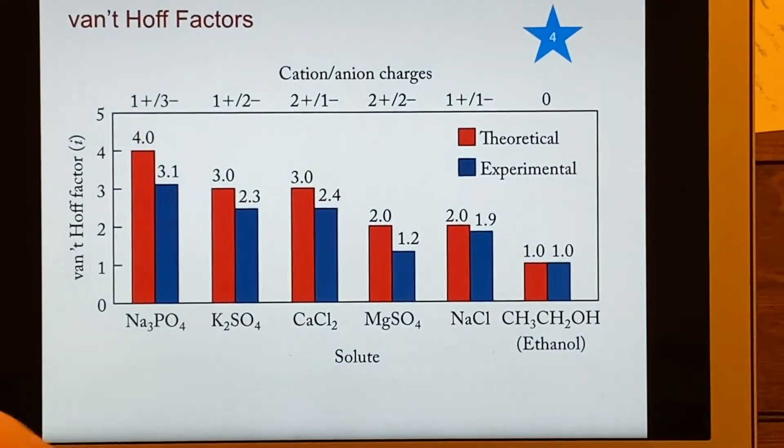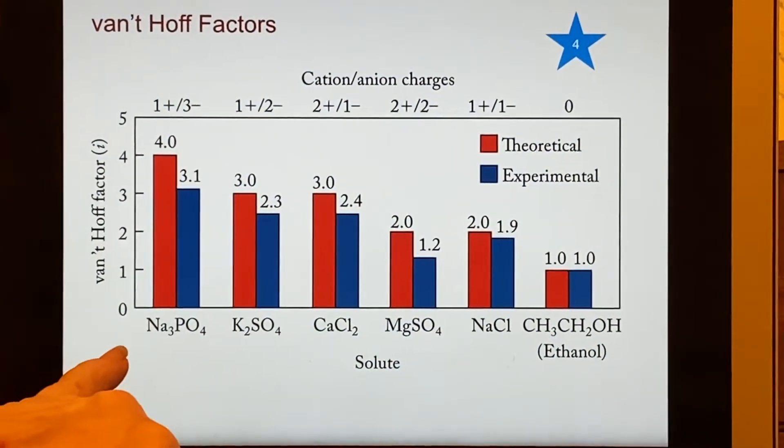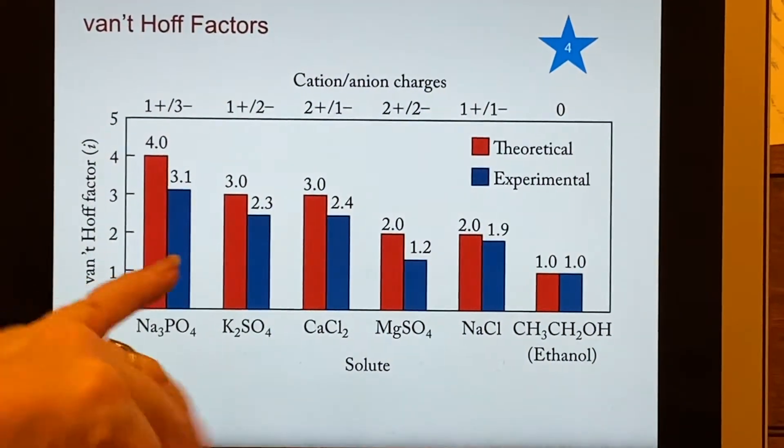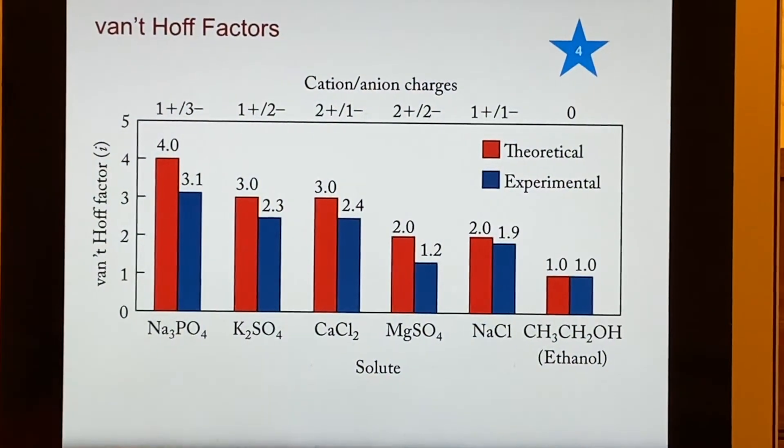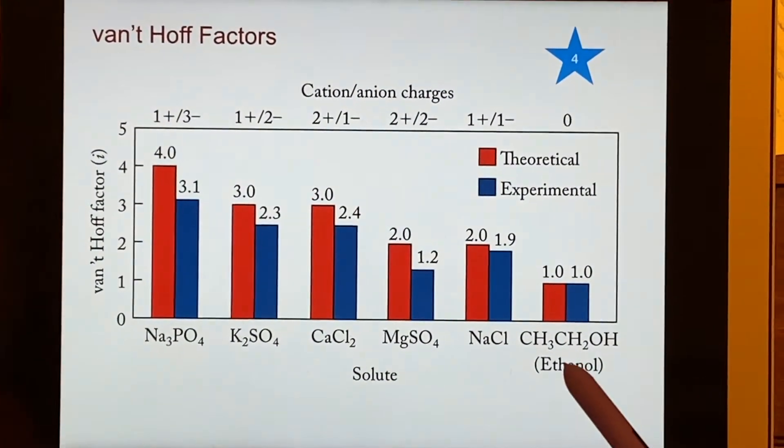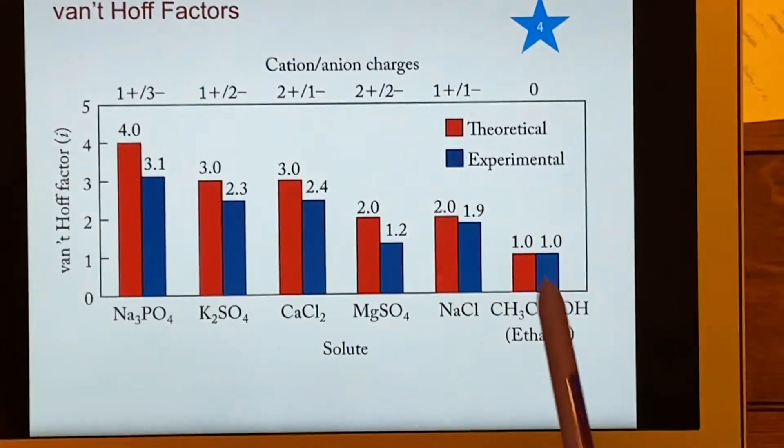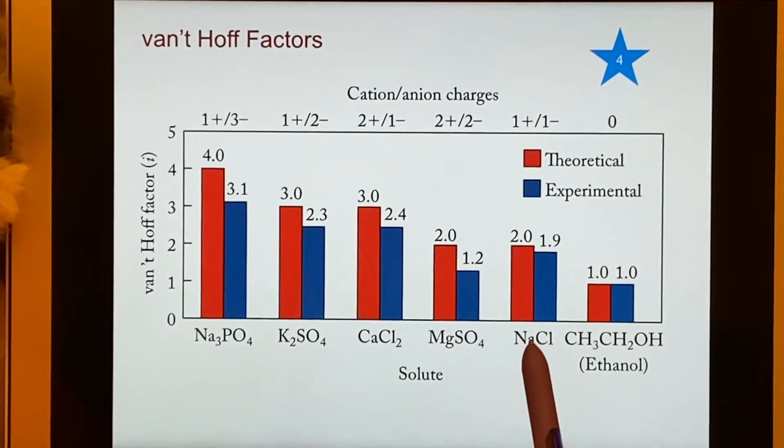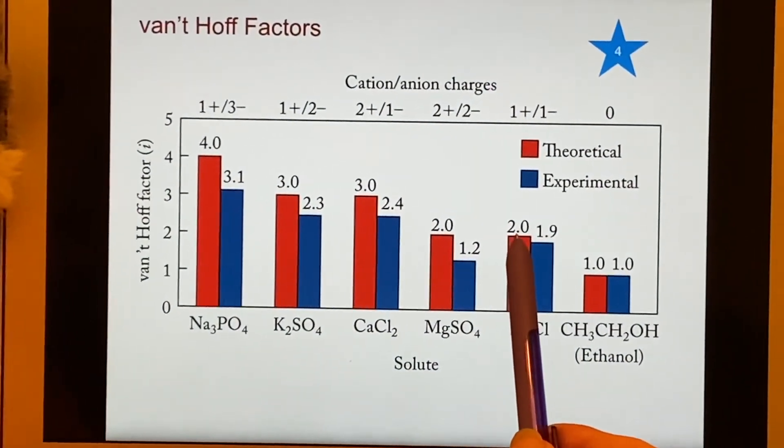Here are some possible things that we are going to dissolve in the water, and here is the van't Hoff factor for each of them. In red is what we would normally think of, and as you can see, ethanol has a one because it doesn't break apart. So you put in one of these, you still have just one particle. Sodium chloride theoretically completely comes apart, and we would have two particles.